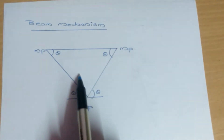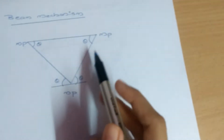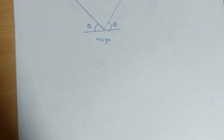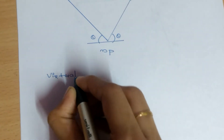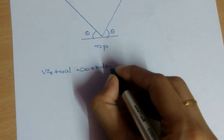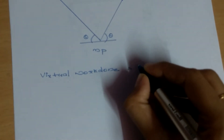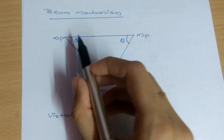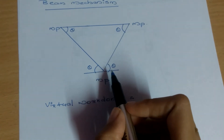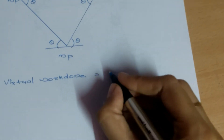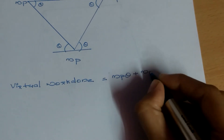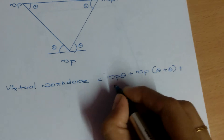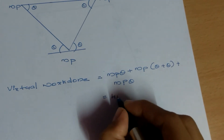For the beam mechanism, the virtual work done diagram is as follows. Virtual work done equals MP·θ + MP·(θ + θ) + MP·θ, giving a total of 4MP·θ. We consider only one angle theta because the force of 140 kN is acting at 3 meters, which is equidistant from both ends.